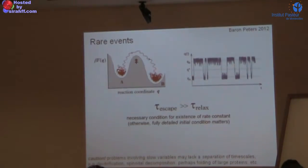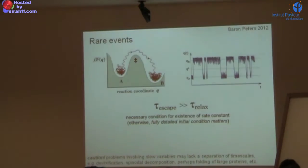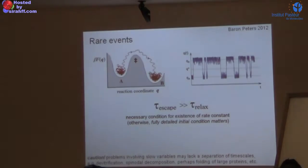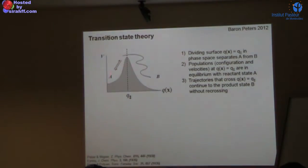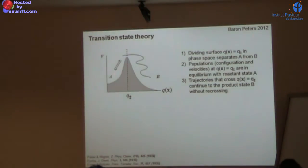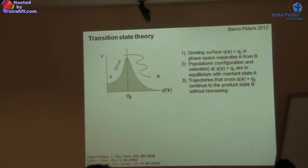Let me start by just recapping some of the key things. We talked about the necessity of timescale separation to talk about using rare events methods and properly defining rate constants. And we talked about transition state theory, which hinges upon three assumptions: you have a dividing surface, you have an equilibrium population of transition state species on that dividing surface relative to your reactive state, and you have the no-crossing property that once a trajectory crosses that dividing surface, it never comes back.